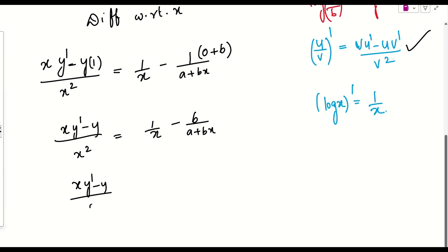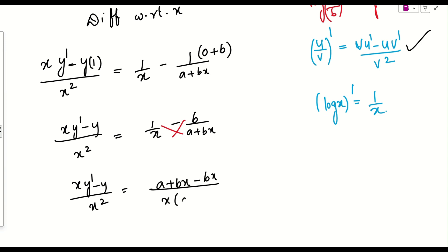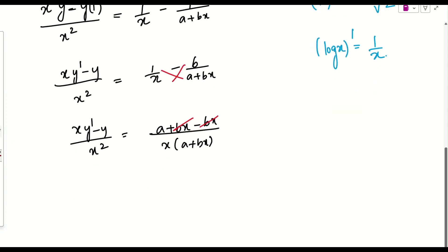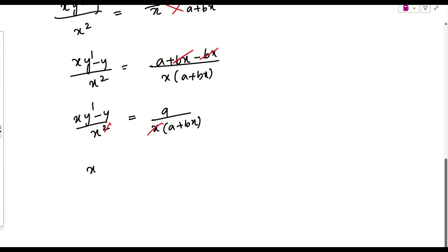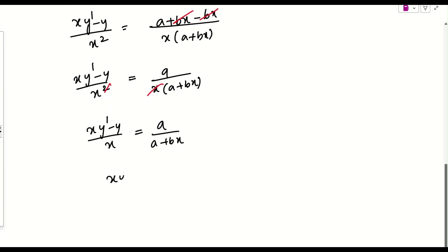So we have (xy' − y)/x² = 1/x − b/(a+bx). Taking the LCM on the right side by cross multiplication: [1·(a+bx) − b·x] / [x(a+bx)] = [a+bx−bx] / [x(a+bx)] = a / [x(a+bx)]. Cancelling one factor of x from both sides: (xy' − y)/x = a/(a+bx), giving us xy' − y = ax/(a+bx). Call this Equation 1.